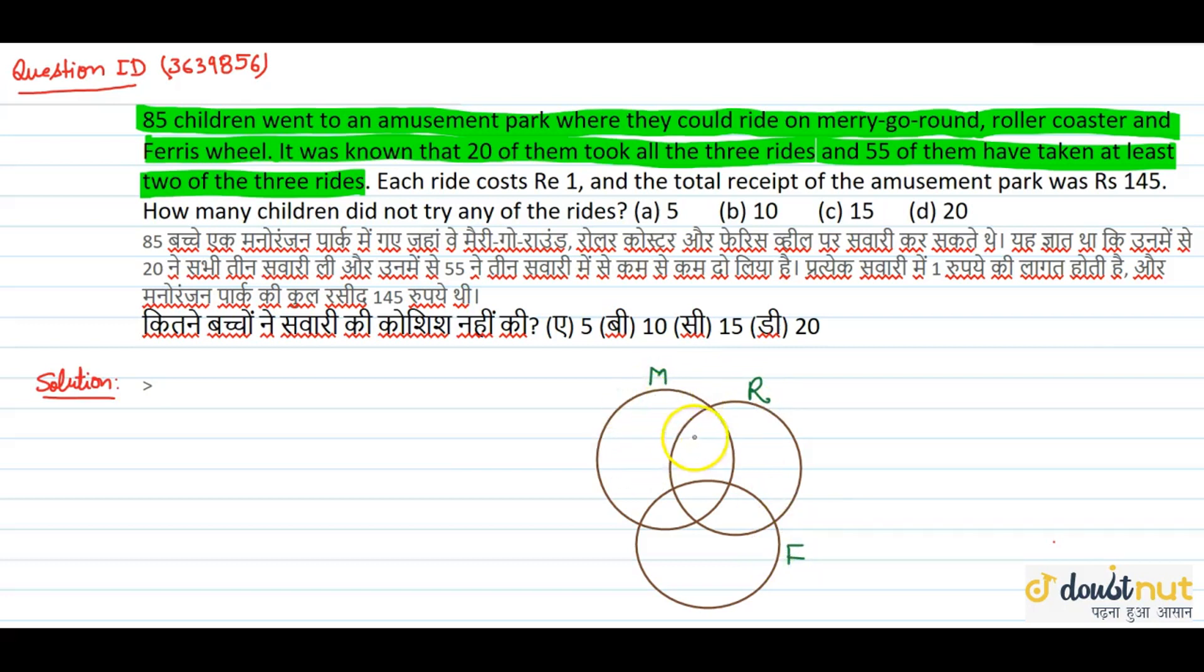Now we have the overlapping portions. This is the overlapping part where children have M and R.